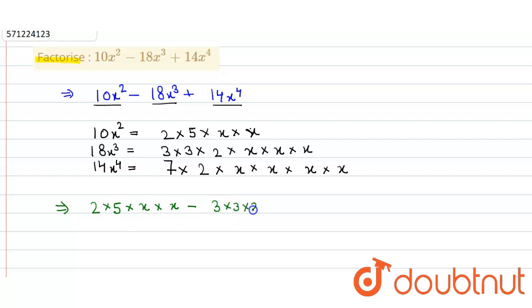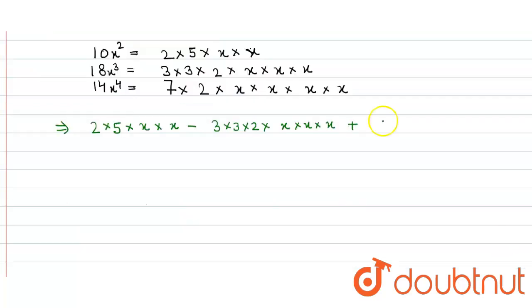So 10x² is 2 × 5 × x × x, minus 3 × 3 × 2 × x × x × x, plus 7 × 2 × x × x × x × x.